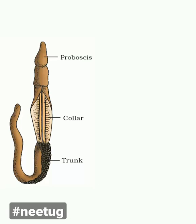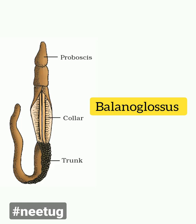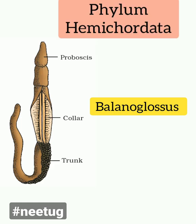The organism shown in the diagram is Balanoglossus, and it belongs to phylum Hemichordata. In this video we are going to discuss some features of phylum Hemichordata.